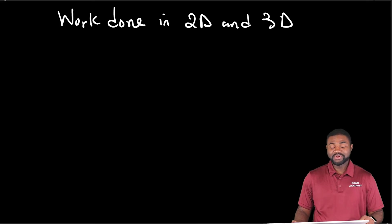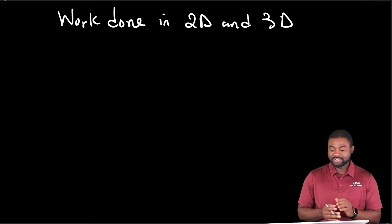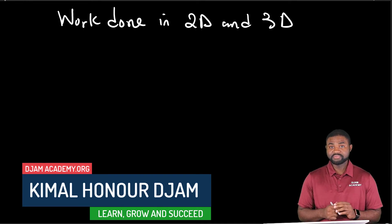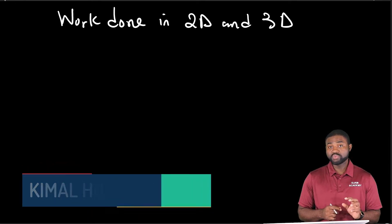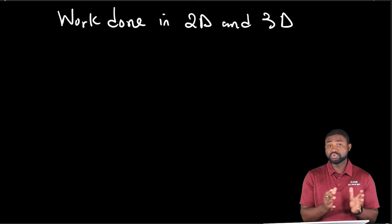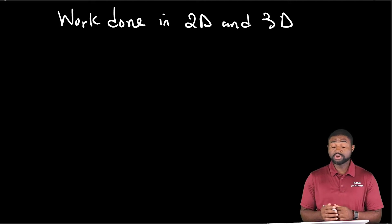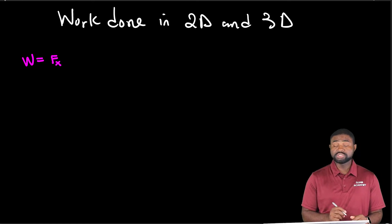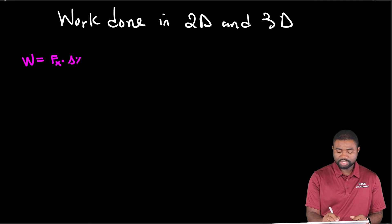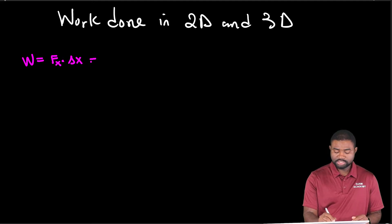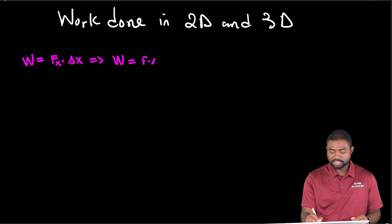Hello everyone and welcome to Jam Academy. This lesson is about calculating the work done in two and three dimensions. So far we have dealt with situations in which a force acting on a system causes the system to move in one dimension, and we saw that the work done by the force is equal to the component of the force in the direction of motion multiplied by the magnitude of the displacement of the point of application of the force — in general, F delta x.